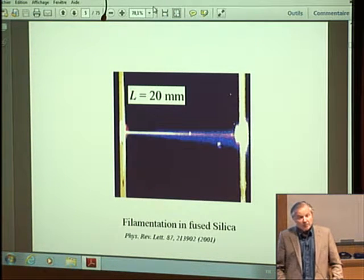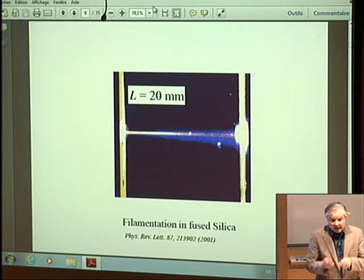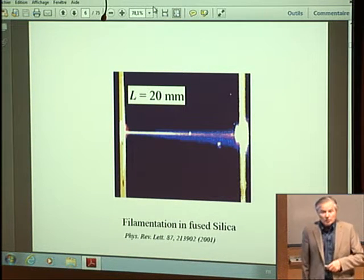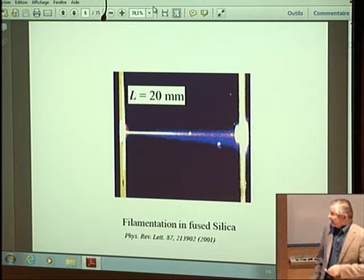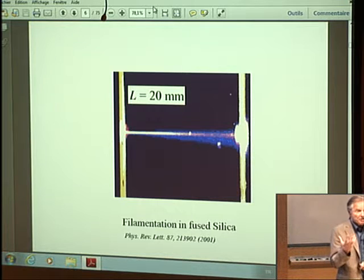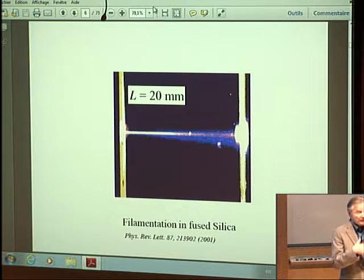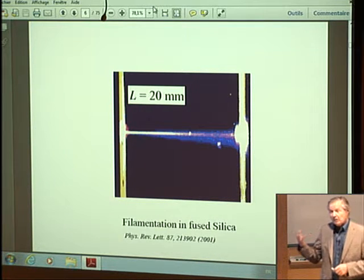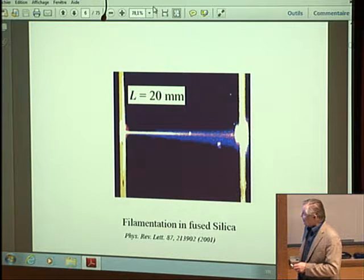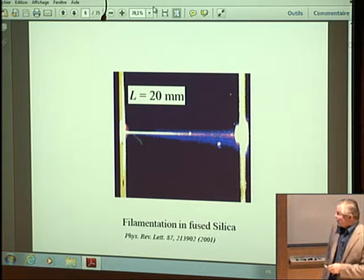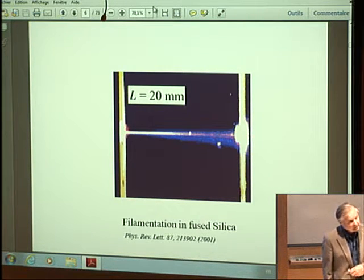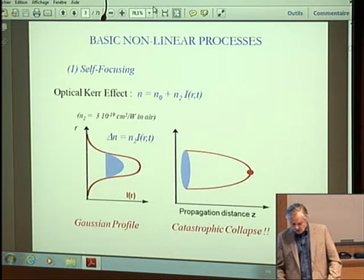But it can also happen on a reduced scale. Like here, we take a piece of fused silica, two centimeters thick, and we focus a laser beam. Here the pulse energy is reduced. Instead of being a few millijoules, it's a few microjoules. But again, we see the same effect that the beam stays confined along the propagation distance. So there is filamentation.